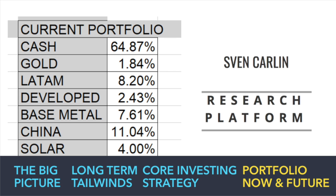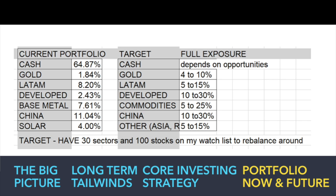Let's look at my current portfolio. Cash is 64%, gold 2%, Latin America 8%, developed markets 2.43%, base metals 7.61%, China 11%, and solar 4%. I'm still in the building phase of the portfolio. My target is to get to about 30 sectors and about 100 stocks that I cover and watch meticulously, then find the best businesses to invest in. The goal is to have cash around 20% for opportunities, with gold, Latin America, developed markets, commodities, China, other Asia, Russia — a lot of sectors for me to work on.